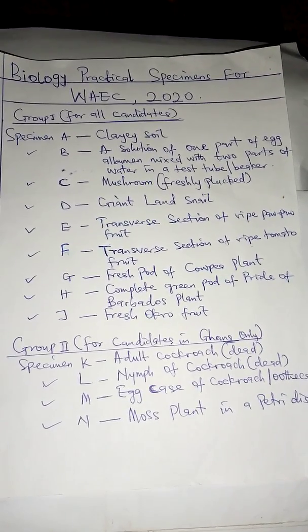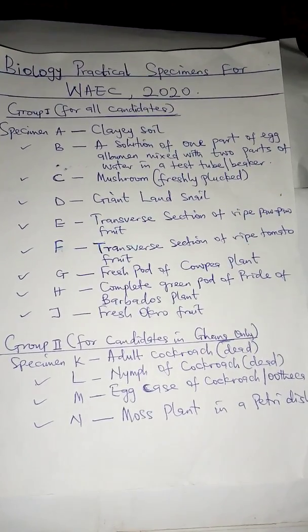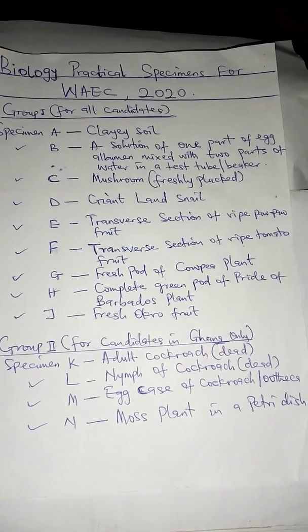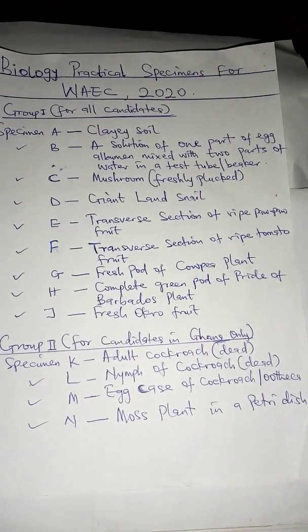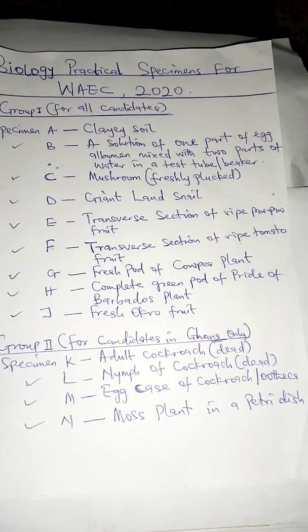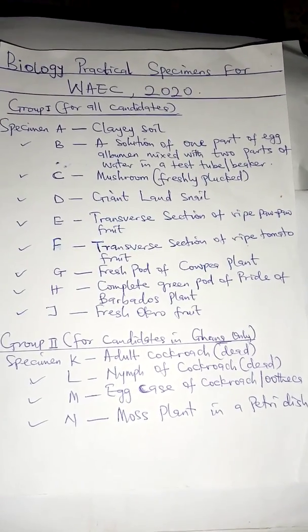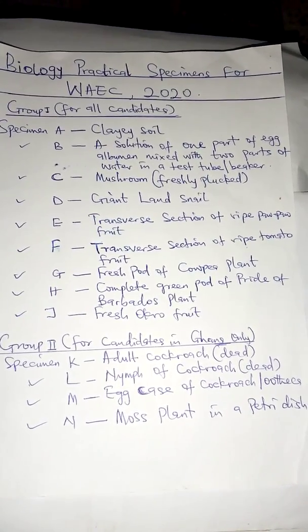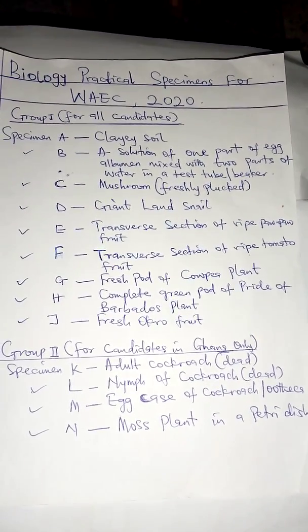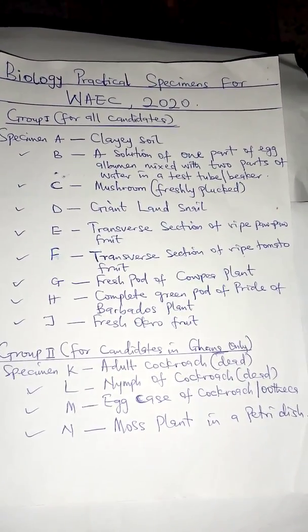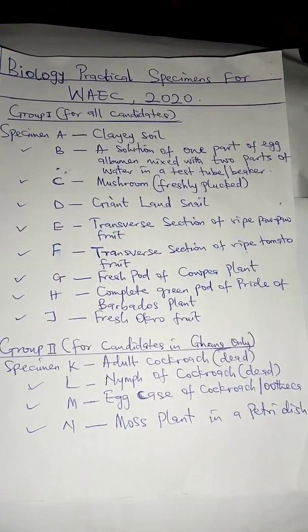Specimen A: clay soil. Specimen B: a solution of one part of egg albumin mixed with two parts of water in a test tube or beaker. Specimen C: mushroom, freshly plucked.